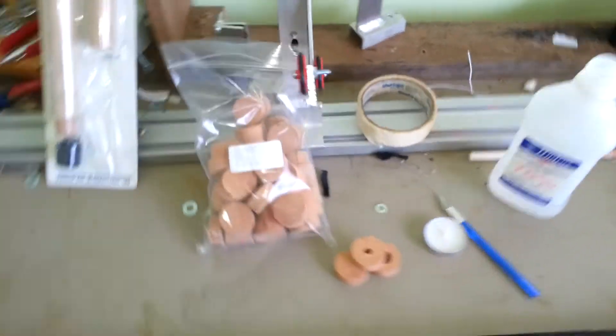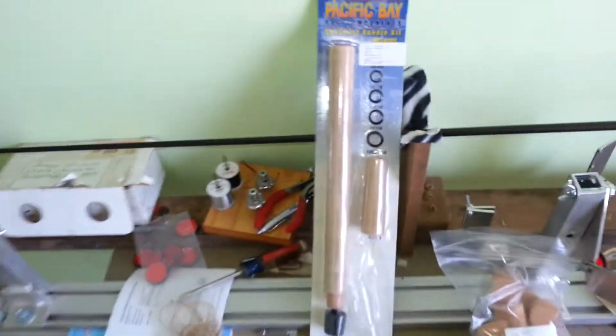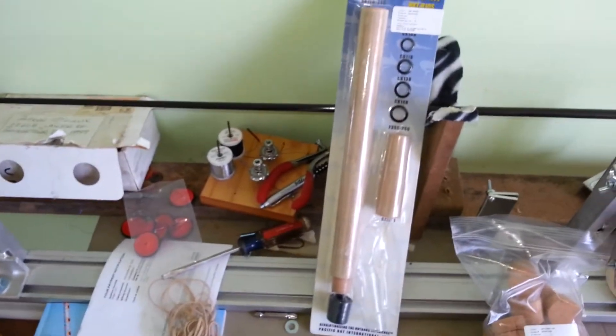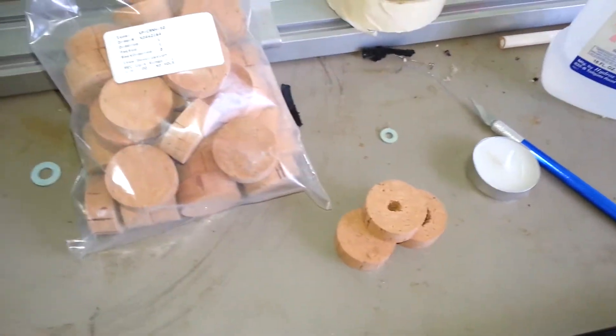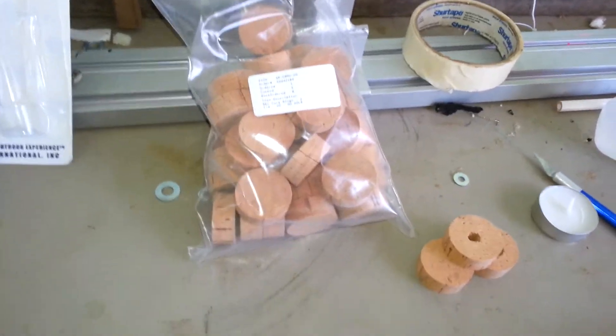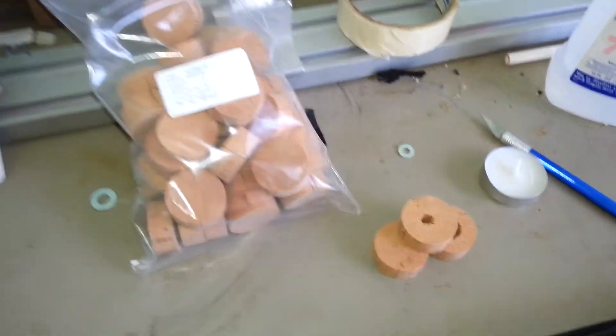You're going to want to get the handle kits they sell, or you can buy the cork rings like I got. I got them for a pretty good deal. You'll just have to ream your own hole and set them up and sand them down to the size you want.